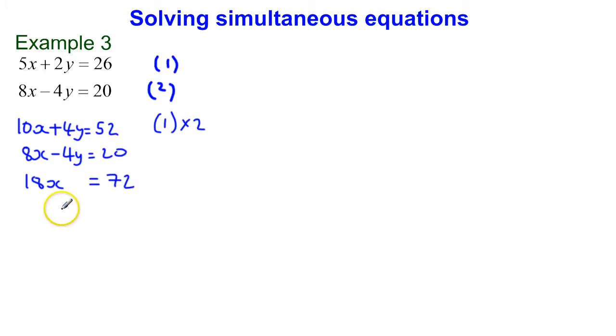So if 18x is equal to 72, that tells me that x is going to be equal to 4. 72 divided by 18 is 4. I now know what x is, and I'm going to substitute this back into one of my equations. I'm going to substitute it into the top equation here.